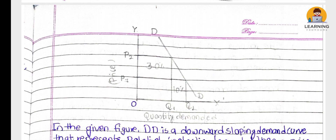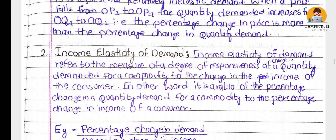Now we have price elasticity of demand covered. In Class 9, the next is income elasticity of demand. Income elasticity of demand refers to the measure of the degree of responsiveness of the change in quantity demanded for a commodity to the change in the income of the consumer. If the consumer's income is good, then the quantity demanded changes accordingly - that is income elasticity of demand.